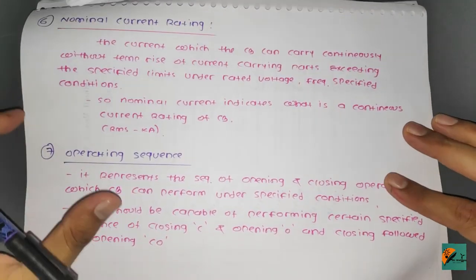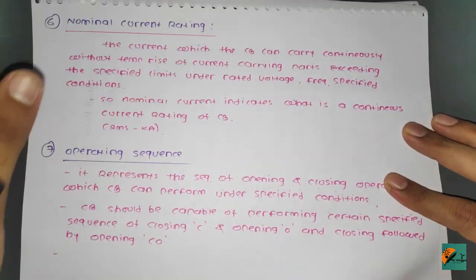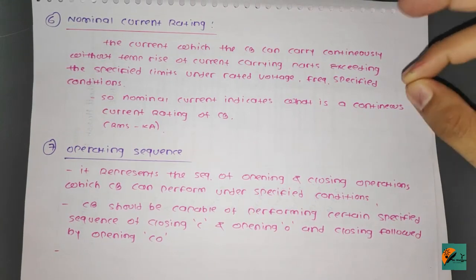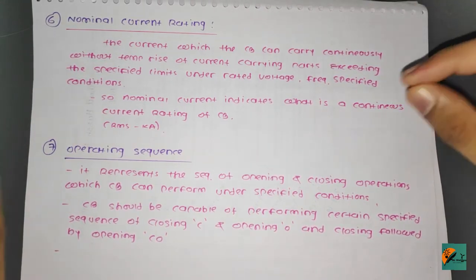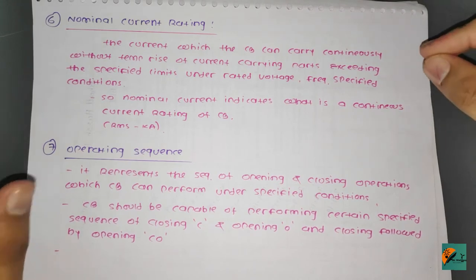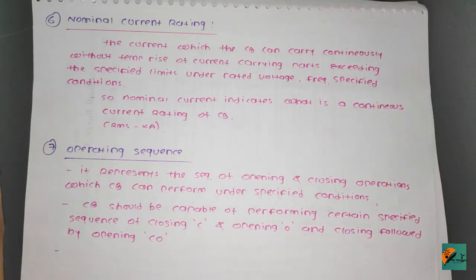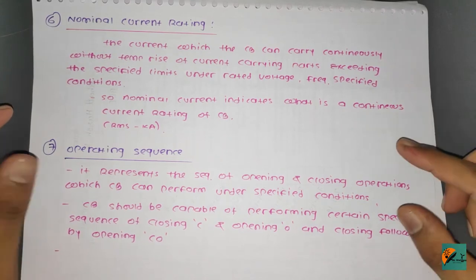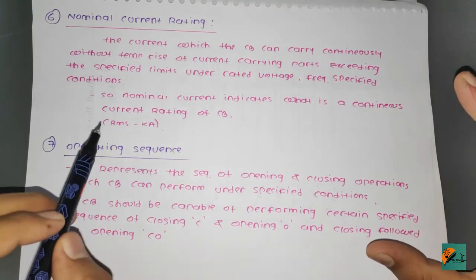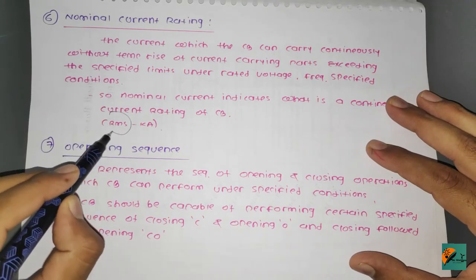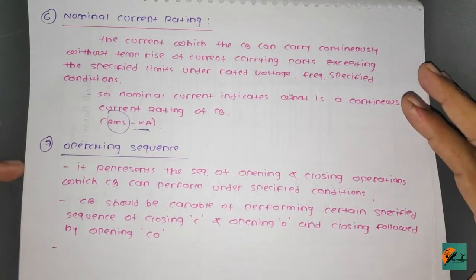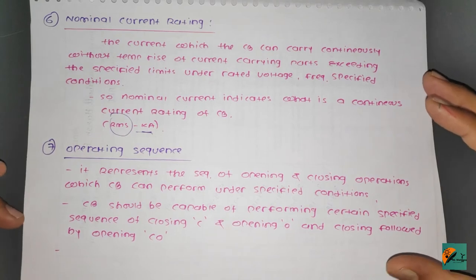The next one is nominal current rating. It is the current which the circuit breaker can carry continuously without the temperature rise of current-carrying parts exceeding specified limits, under rated voltage, frequency, and specified conditions. Nominal current indicates the continuous rating of the circuit breaker, expressed in RMS kiloamperes.